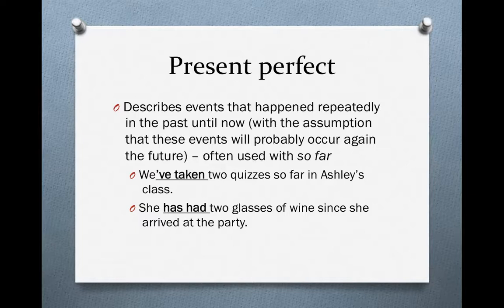Second sentence: 'She has had two glasses of wine since she arrived at the party.' This uses 'has' plus the past participle of 'have,' which is 'had.' What this sentence means is that in the past she drank two glasses of wine. She's not necessarily drinking right now, but she probably will drink another glass before the party is over. We assume that she will continue to drink — this event is not finished.